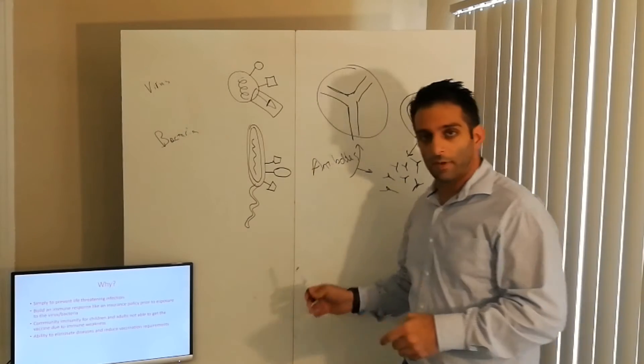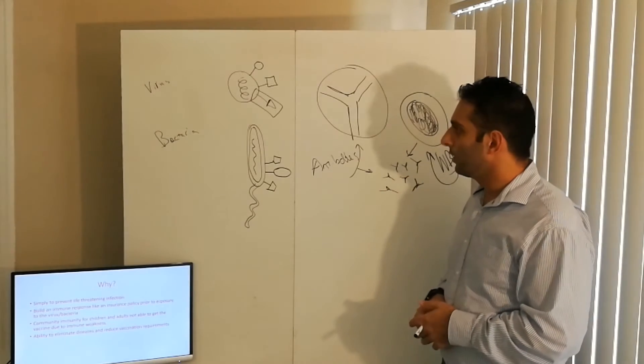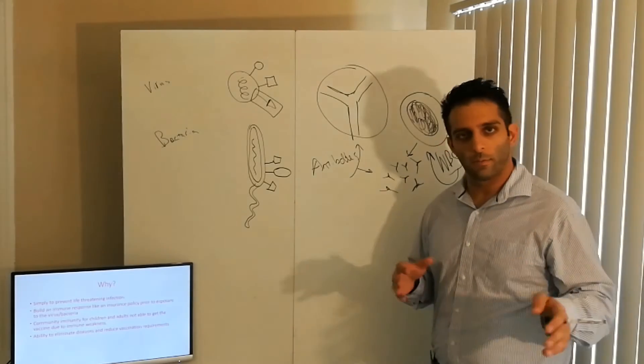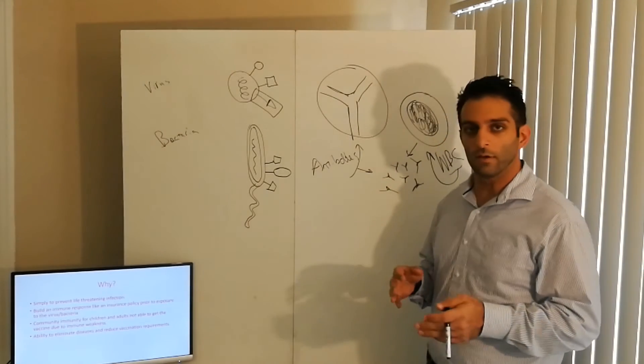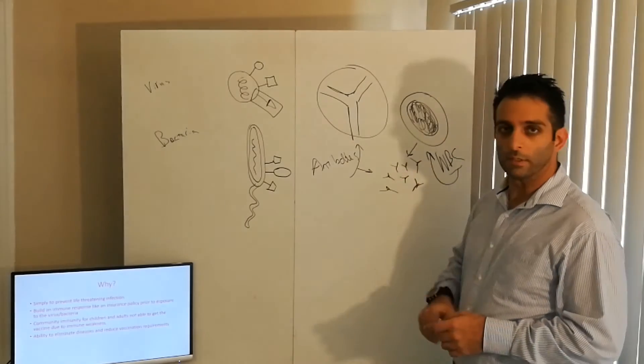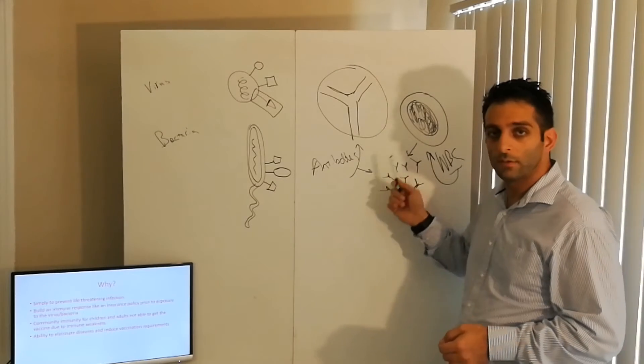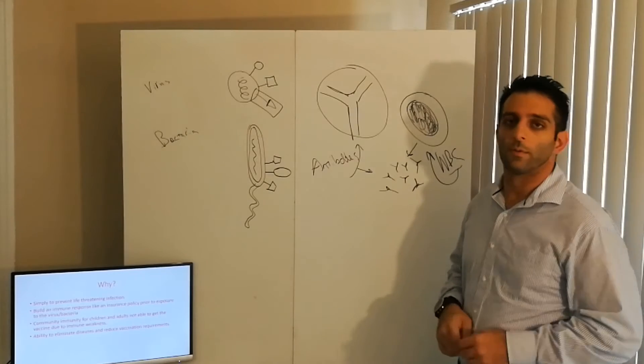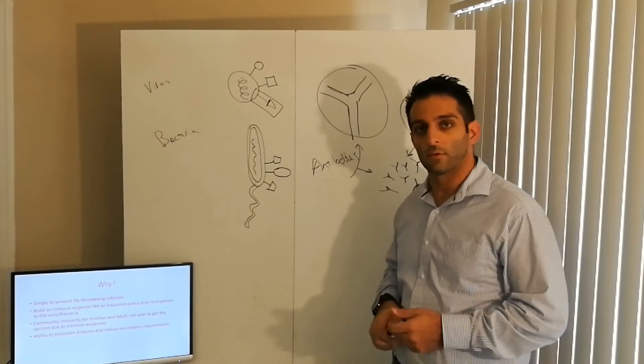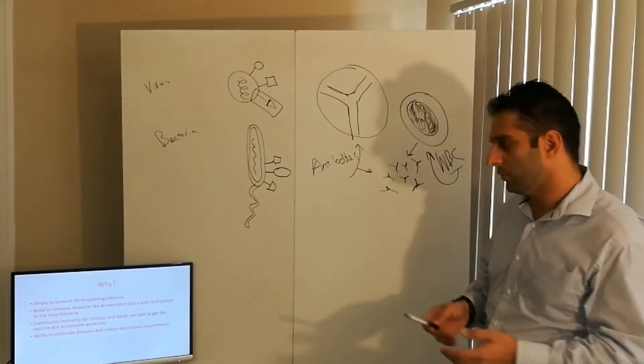When everybody gets vaccinated against a specific virus or bacteria, it does create what's called community immunity. There are children that, we'll talk about a little bit later, certain diseases that can't get vaccines. People who can't get vaccines are typically those who don't have the white blood cells. Will they get sick from the vaccine if they don't have the white blood cells? They won't, the vaccine just won't work. You need the white blood cells and you need the vaccine to create antibodies, or you need the white blood cells and the disease. Two ways you can get antibodies.